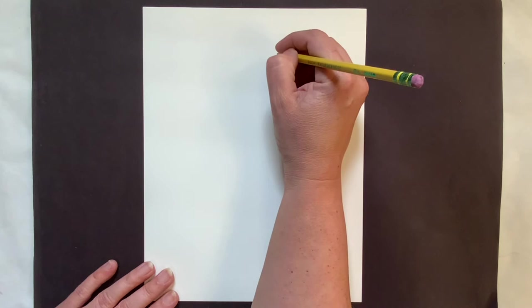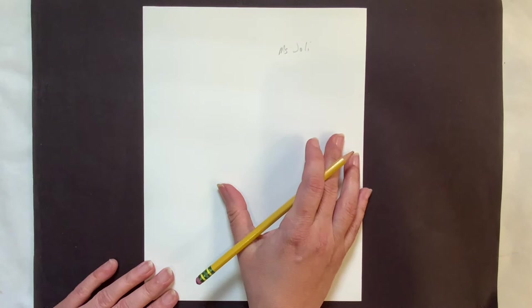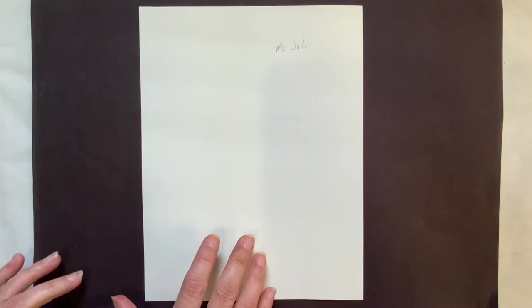So we have our sheet of paper. Go ahead and write your name on the paper. I'm going to use a marker because pencil you won't really be able to see my artwork. You can have different crayons and pencil and eraser to start off with.